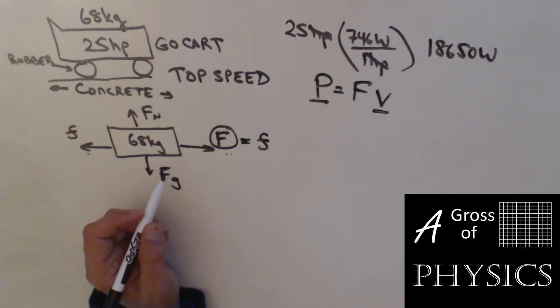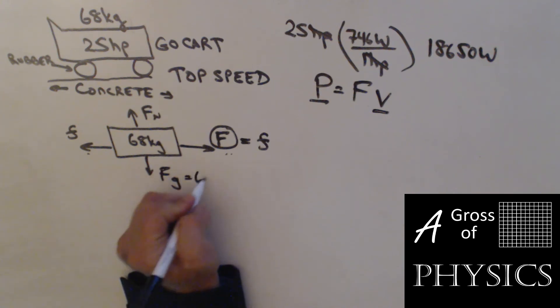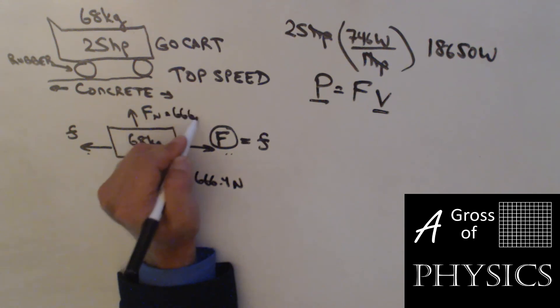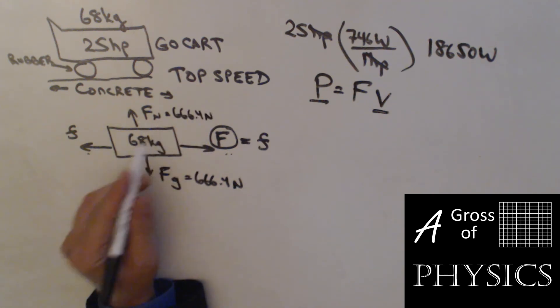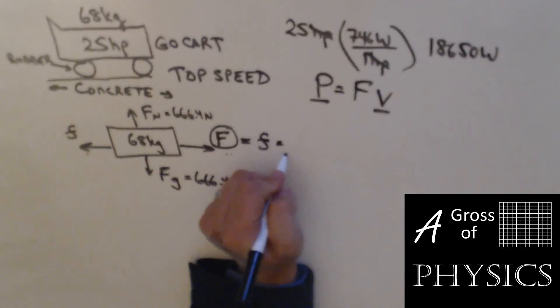Starting with the y, 68 times 9.8 is 666.4 newtons, which is also the same as the normal force. The reason we needed that is because we have to find friction. Friction is mu times Fn.